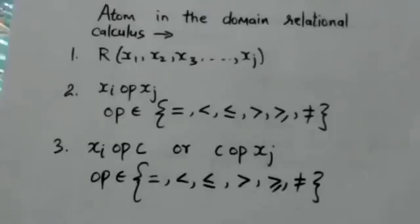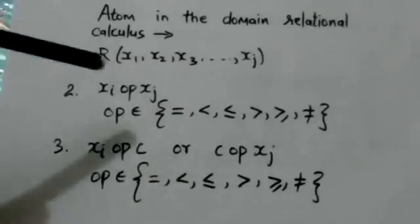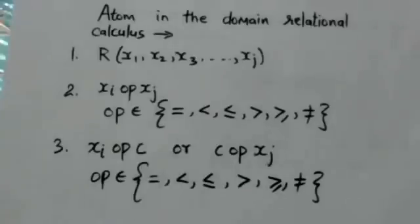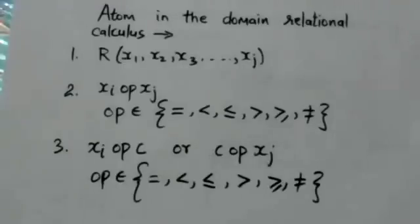The second is an atom of this form: Xi op Xj. Here Xi and Xj are domain variables, and op is a comparison operator such as less than, less than or equal to, equal to, not equal to, greater than, or greater than or equal to.